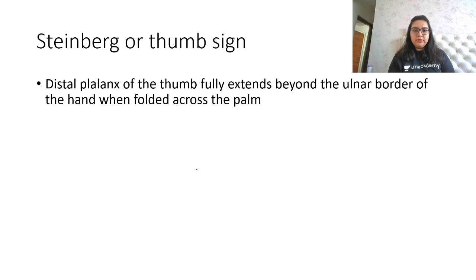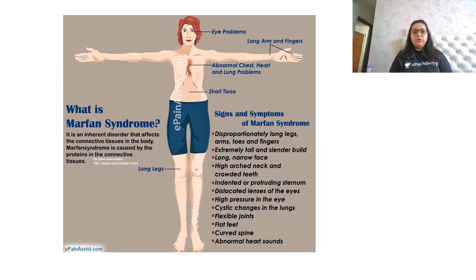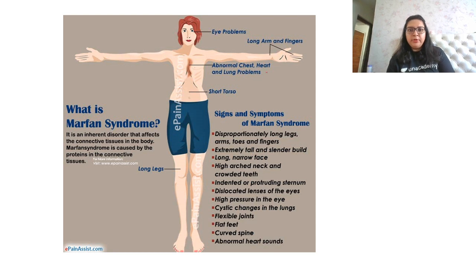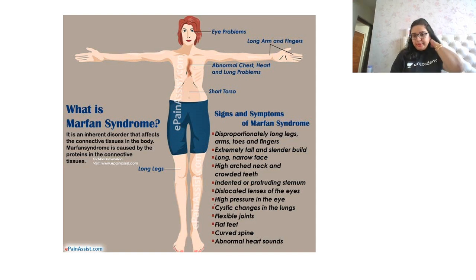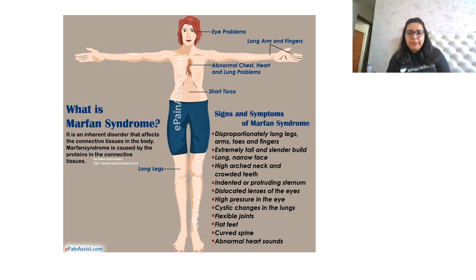The full presentation of Marfan syndrome includes eye problems, long arms and fingers, abnormal chest, heart and lung issues, a short torso, disproportionately long legs, arms, toes and fingers, an extremely tall and slender build, a long and narrow face, high arch palate, crowded teeth, indenting or protruding sternum, high eye pressure, cystic lung changes, flexible joints, flat feet, curved spine, and abnormal heart sounds.